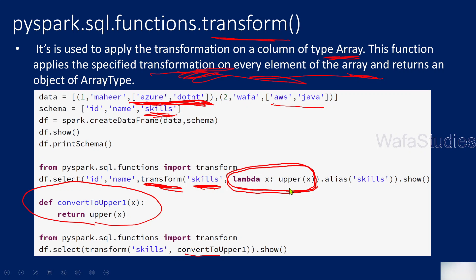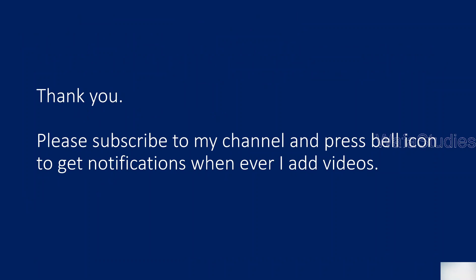The key takeaway is that this transform function available inside PySpark sql.functions takes only array type columns, executes a custom transformation, and the data it returns is also array type only. I hope you got a clear idea about it. Thank you for watching. Please subscribe to my channel and press the bell icon to get notifications whenever I add videos. Thank you so much.